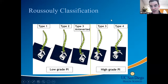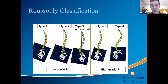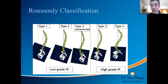Frank Schwab criticizes Rousseli for having categories, saying it's a continuum. I think if you can put into your head that it is a continuum — low PI on the left, high PI on the right — as you go left to right, the apex of lumbar lordosis moves north. A type 1 has the apex at the L5 vertebral body; the arc of lordosis is essentially L3 to the sacrum. We all talk about LL as L1 to S1 — why L1? It's kind of random.